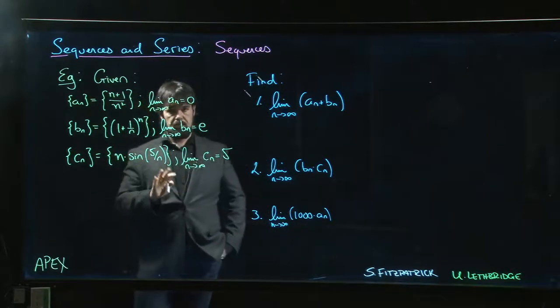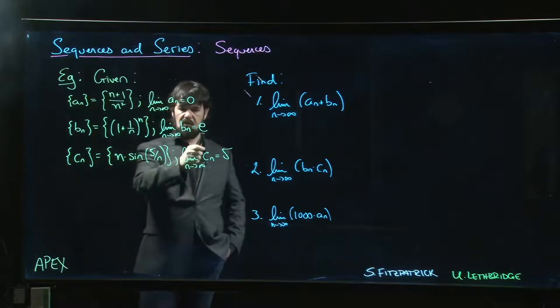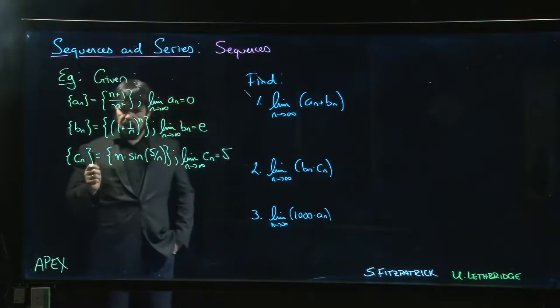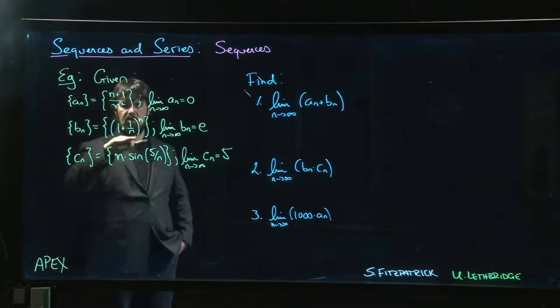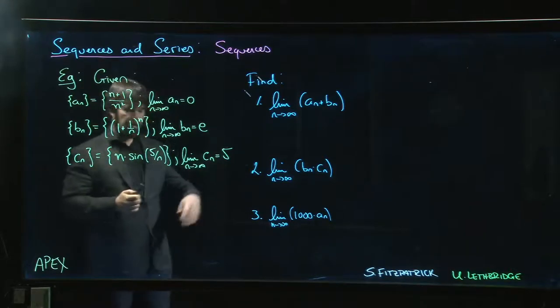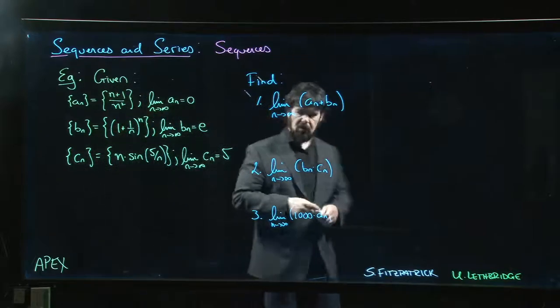This one here is interesting - that is like base e from the natural exponential function, that's Euler's number. Some people will actually take this as a definition of e, which is interesting. But you can show that the limit is equal to e using L'Hôpital's rule, techniques for indeterminate forms.